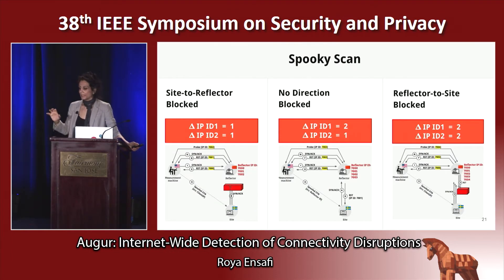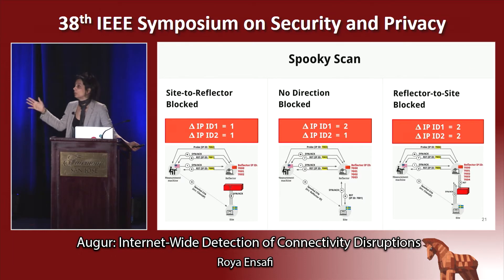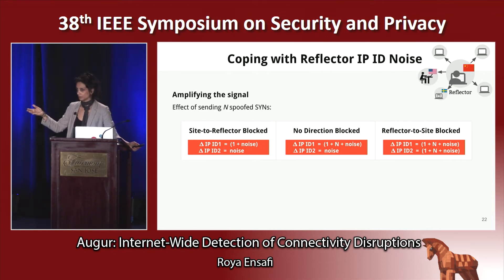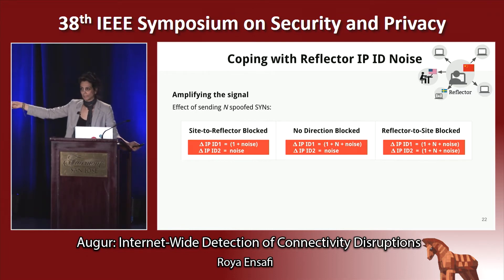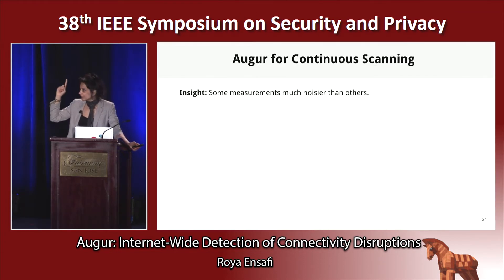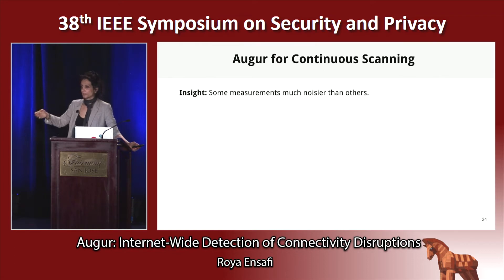So we have three cases and three different delta IPID patterns, and therefore we can detect them. In reality, reflectors have other hosts to talk to, so we have to cope with noise. The simplest way to deal with that is to amplify the signal by sending multiple spoofed SYN packets instead of just one. And since packets can get lost or reflectors can receive sudden traffic bursts, it makes sense to repeat the measurement. Another good insight is that not all reflectors have the same noise level, and if we want to measure continuously and globally, we need to exploit that.